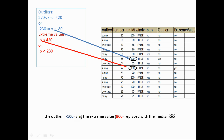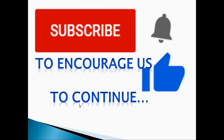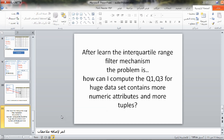The outlier minus 100 and the extreme value 900 are replaced with the median, 88. Now, after learning the interquartile range filter mechanism, the problem is: how can we compute Q1 and Q3 for a huge dataset containing more numeric attributes and more tuples? The answer is the second way to replace outliers and extreme values.